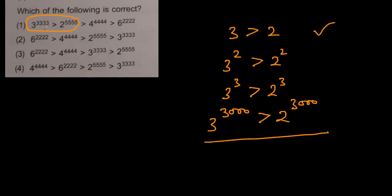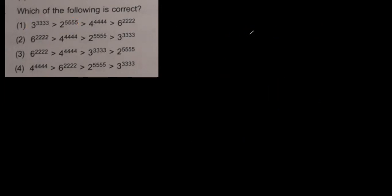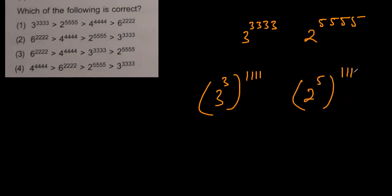When we are comparing these two numbers, we already know three is greater than two. Three to power 3333 and two to power 5555—these two numbers can be written as three to power three raised to power 1111, and two to power five raised to power 1111. We know this power gets multiplied. Since their exponents are the same, to answer whether this statement is correct, we can answer about the base.